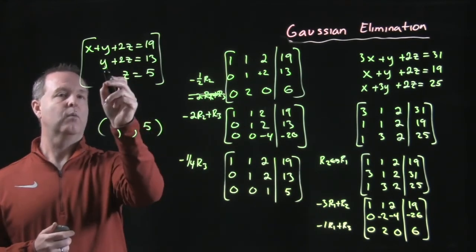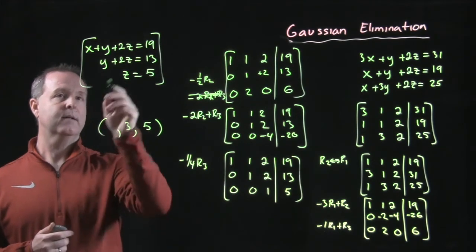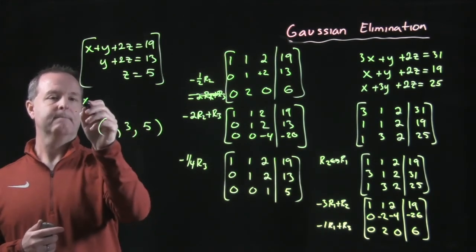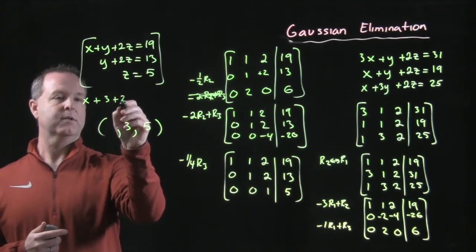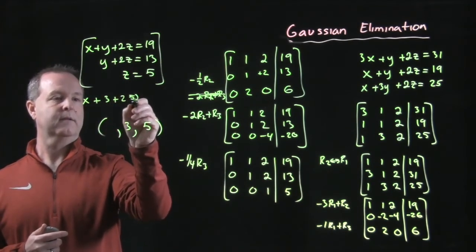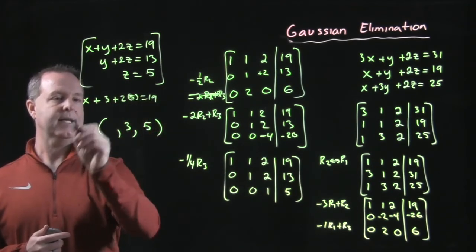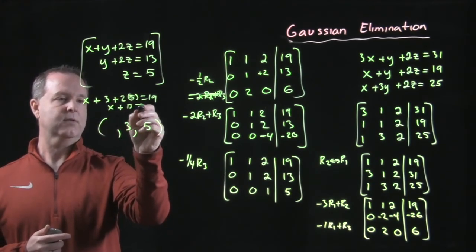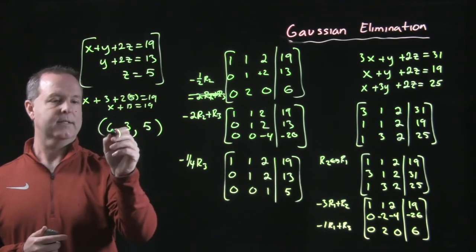Y would equal, y plus 10 would equal 13, so y equals 3. Plug those back into the first one. So x plus 3 plus 2z, which is 5, equals 19. X plus 13 equals 19, and x equals 6.